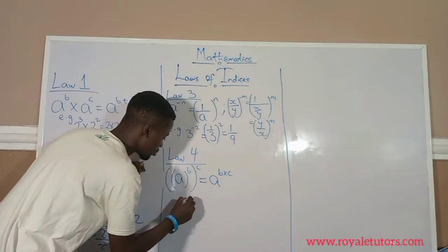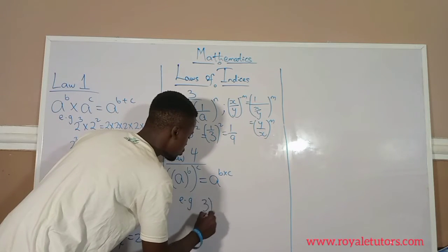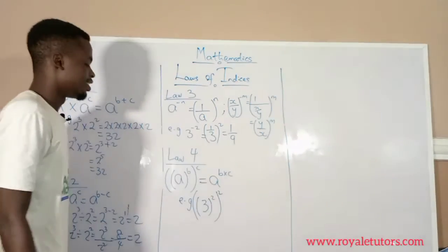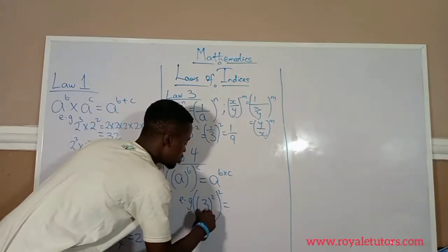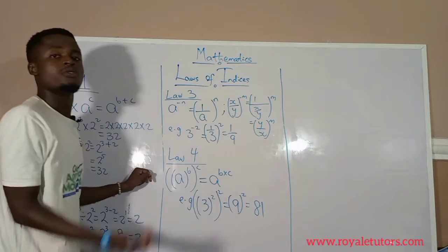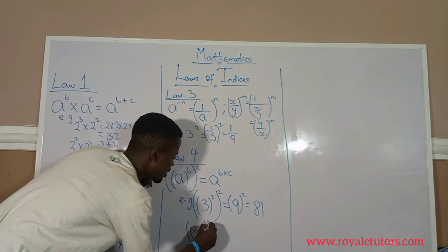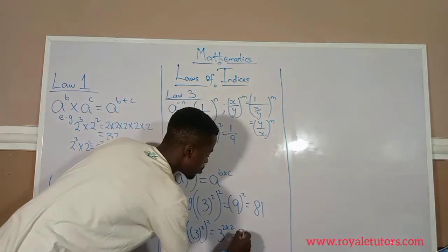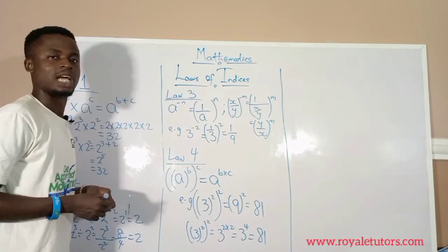For example, if you have 3 raised to power 2, all raised to power 2 — without law of indices, 3 raised to power 2 is 9, and 9 raised to power 2 is 81. But using law of indices, 3 raised to power 2, all raised to power 2, is simply 3 raised to power 2 times 2, which gives us 3 raised to power 4, and that's 81.